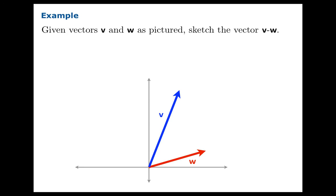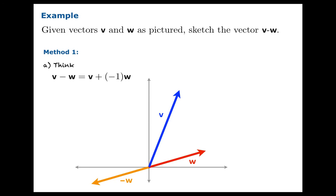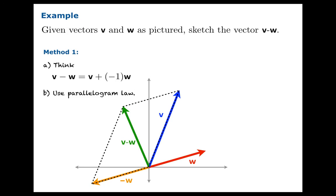Let's end with a couple of examples. Suppose v and w are vectors pictured below — let's sketch the vector v minus w. We should point out that we haven't even defined what v minus w is; we haven't had any definition of vector subtraction. But v minus w is really v plus the additive inverse of w. One method: draw negative w, then use the parallelogram rule to add v and negative w, and you get the vector v minus w.